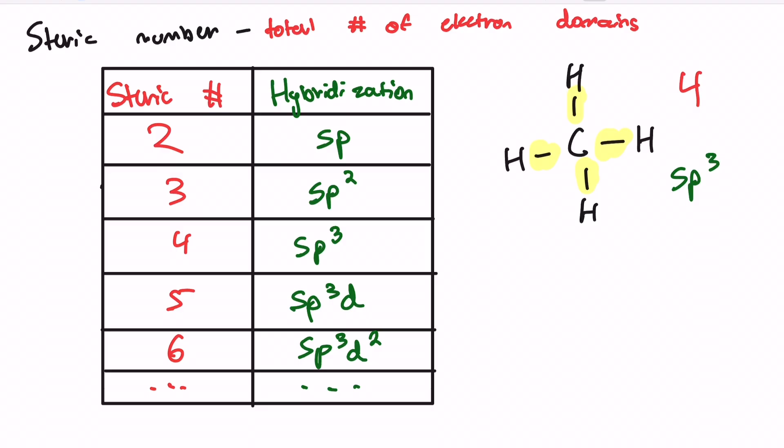Let's do the same for water. This water also has 4 regions of electron density. So our steric number is 4. And because of that, our hybridization is sp3. That right there is how we would find the hybridization of an atom. Pretty simple, right? Just remember the steric number and how that corresponds to our actual hybridization.